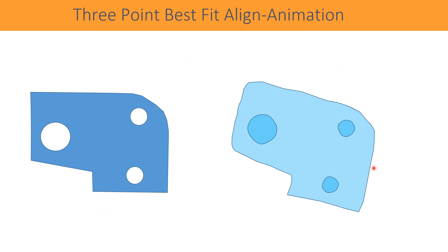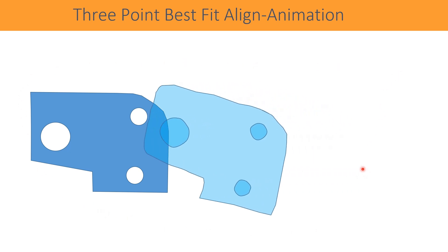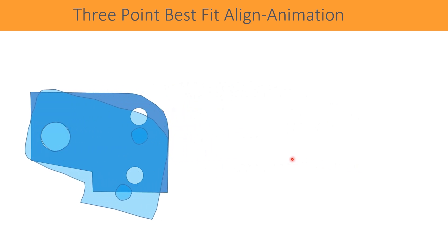The graphical representation of the three-point best fit alignment is explained through the following animation. The alignment works mathematically by translation and rotation of the features. Once the best fit alignment is performed, we can measure the coordinate distances which are more accurate, reliable, repeatable, and reproducible.